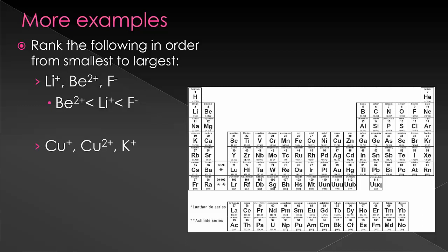Let's do another one. Here we have copper 1 plus, copper 2 plus, and potassium. Right away we can say that copper 2 plus will be a lot smaller, because it's the highest positive charge. But what about copper 1 plus and potassium 1 plus? They both have the same charge. So what we'll do is we'll base it on the periodic trend.